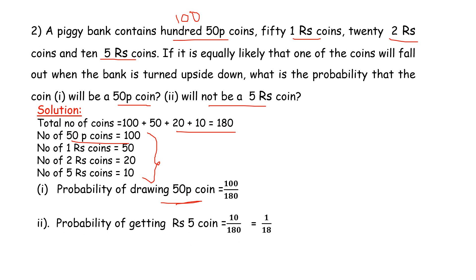Next, the probability of getting a five-rupee coin. The number of five-rupee coins is 10. So the probability is 10 divided by the total number of coins, which is 180. Simplified, that is 1 divided by 18.